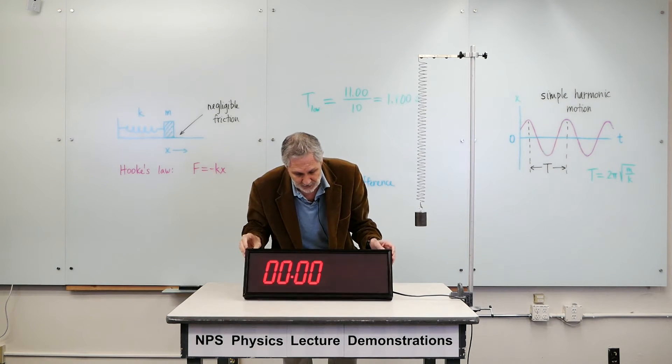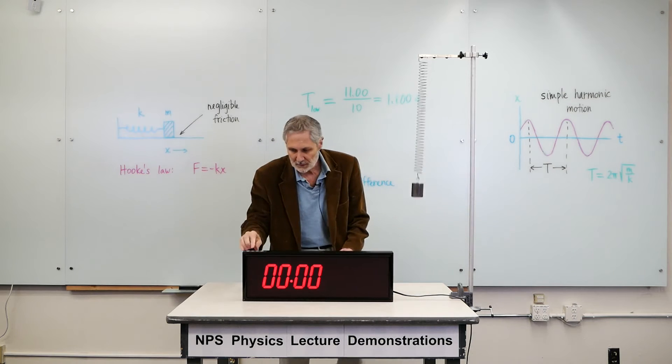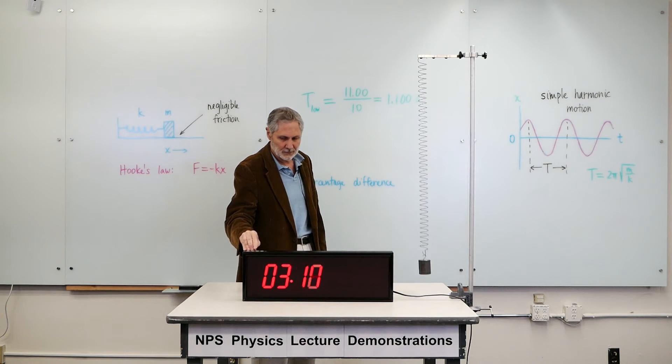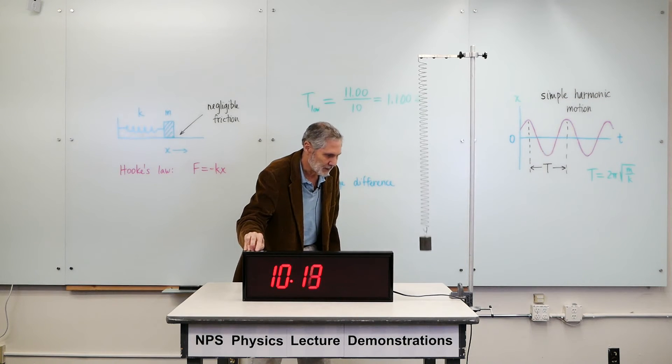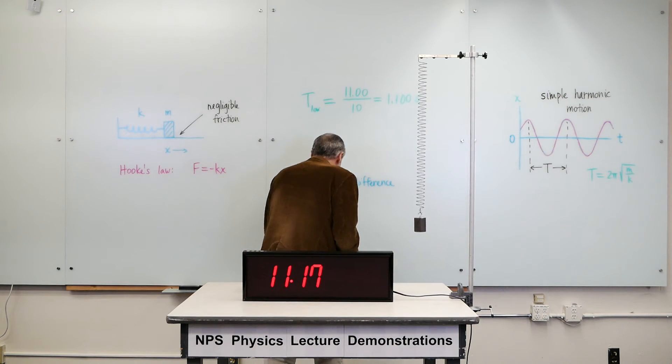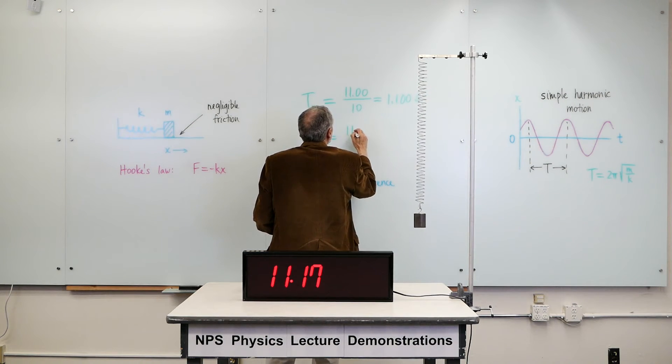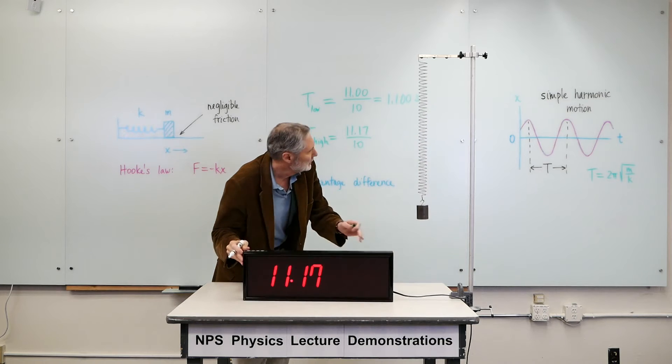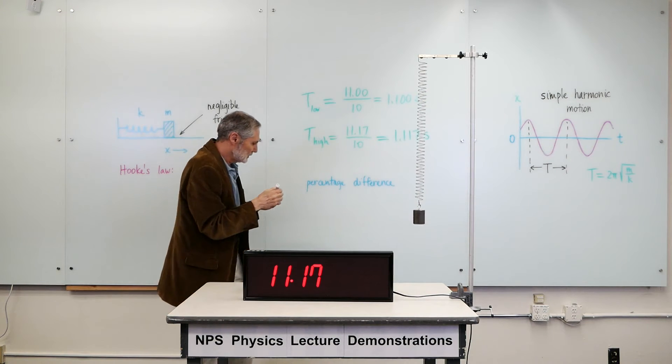Now, let me reset this. And let's look at a much bigger amplitude now. One, two, three, four, five, six, seven, eight, nine, ten. Did I stop it? Yeah. 11.17. So for high amplitudes, we got, let me make sure here, 11.17. So we got a period of 1.117 seconds.